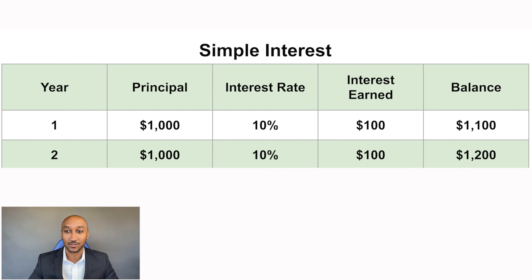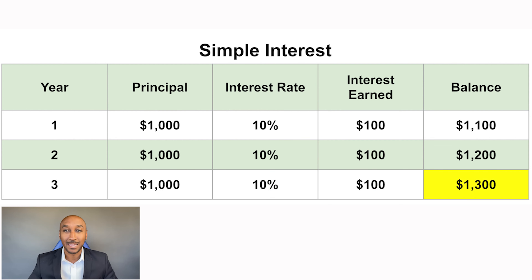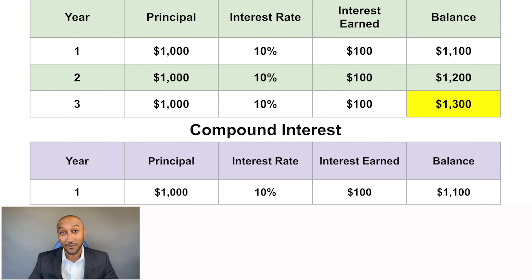That brings your balance to $1,100. Then in year two, you'll make another 10% on that original $1,000, which is another $100, bringing your balance to $1,200. And the same thing happens for year three — another 10% on $1,000, which is another $100, and now your balance at the end of three years is $1,300. So that's how simple interest works: you're going to continue to earn interest on that original amount you invested.